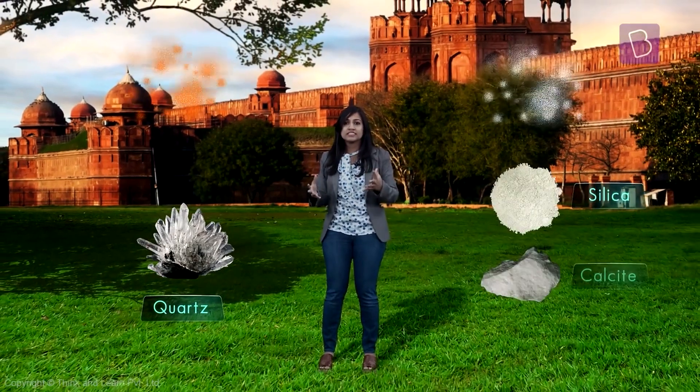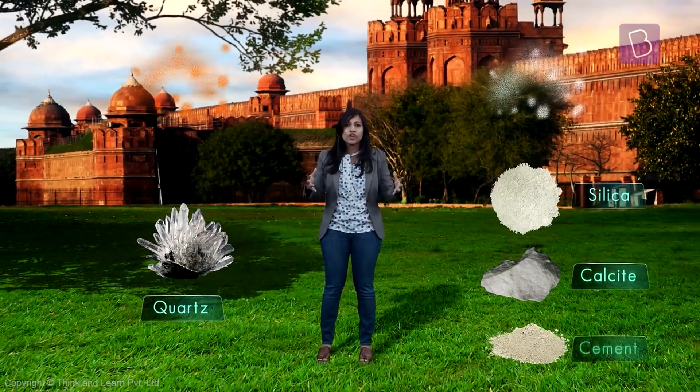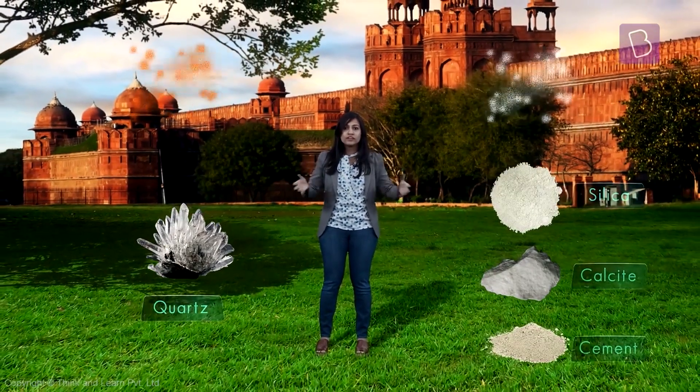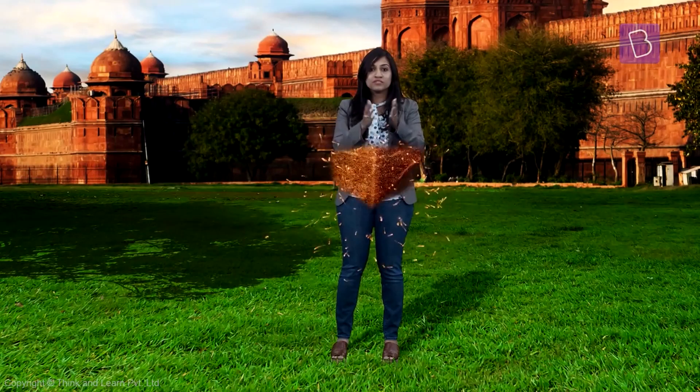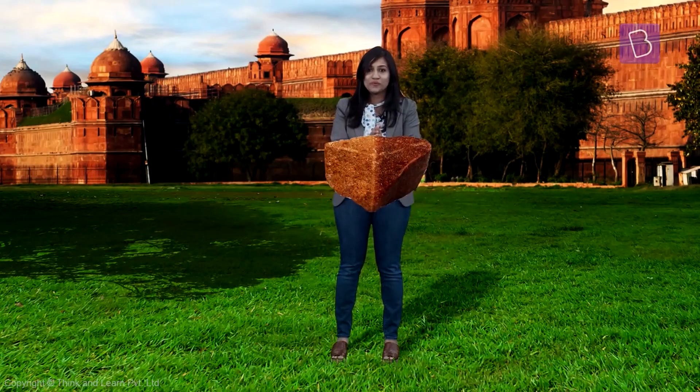Sandstone is made when grains of sand get cemented together with minerals. Sand contains a mineral called quartz in it. Silica, calcite, and cement — all these minerals come together to form sandstone.